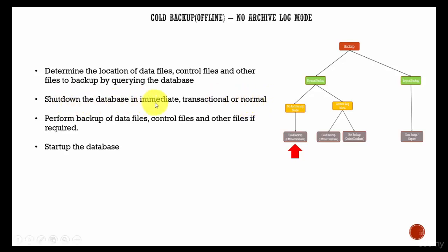Once you shut down the database completely, you take the backup of the data files, control files, and other files if needed. When I say other files, you can take the backup of the parameter file, network files like tnsnames.ora, listener.ora. You can take all the files which you think are important, but the most important are your data files and control files.